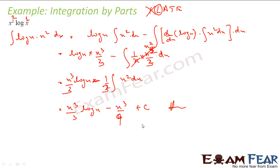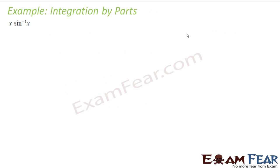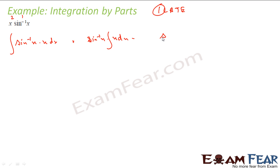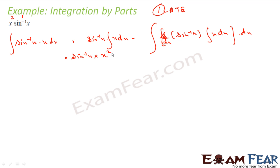Very simple — not rocket science. The critical part in this kind of question is to remember ILATE, find the first function, and use the formula. Let's take one more example: ∫x·sin⁻¹(x) dx. Using ILATE: Inverse — yes, we have it. So sin⁻¹(x) is first, x is second. We need to find ∫sin⁻¹(x)·x dx. This becomes sin⁻¹(x)·(x²/2) minus ∫[d/dx(sin⁻¹x)·(x²/2)] dx.